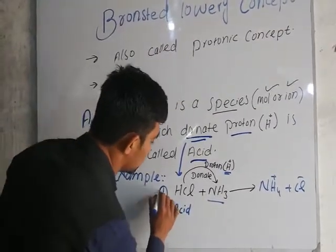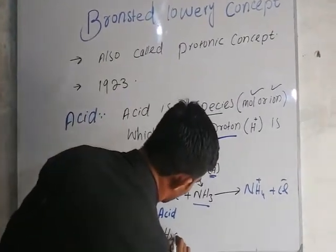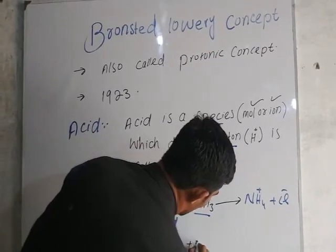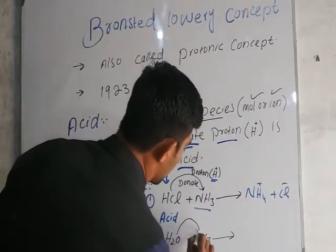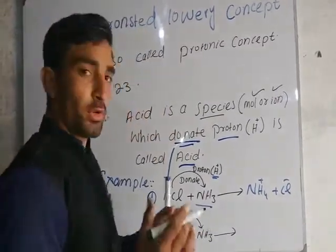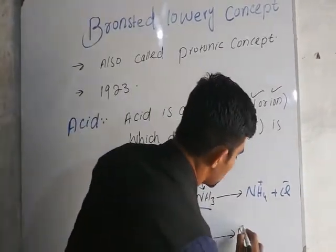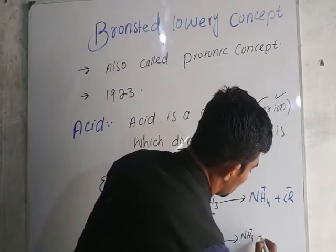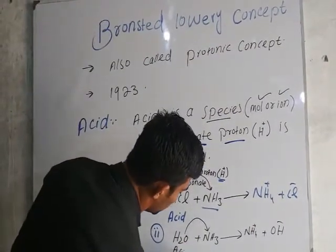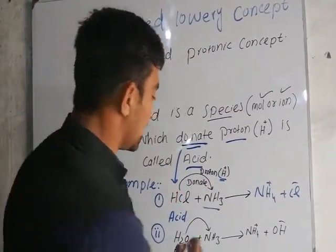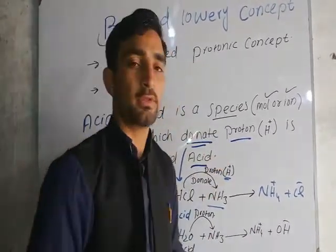For example, let's take a second example. We have H2O plus ammonia. If you have ammonia and H2O, H2O is a source of proton and ammonia accepts it, giving NH4 plus OH.